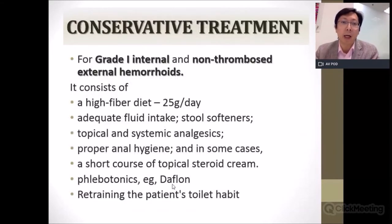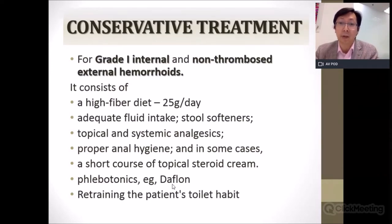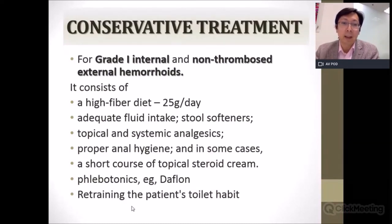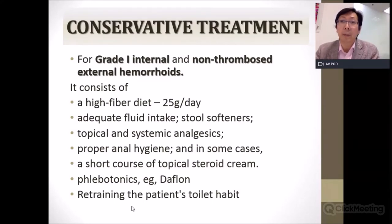For grade one internal and non-thrombosed external hemorrhoids, conservative treatment is appropriate. This includes a high-fiber diet of 25 grams per day with adequate fluid intake and stool softeners, because fiber alone is not effective without fluids. Topical and systemic analgesics for pain or inflammation, proper anal hygiene, and a short course of topical steroid cream may be used. Flavonoids such as DAFLON have been shown to be effective — especially for acute presentations, where a high dose can be given. Finally, retraining toilet habits is important to prevent recurrence.